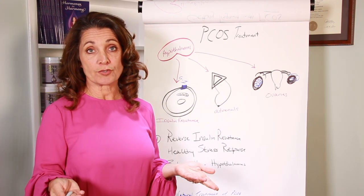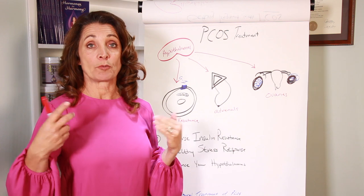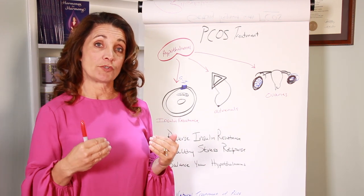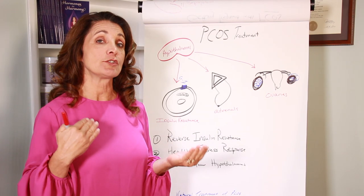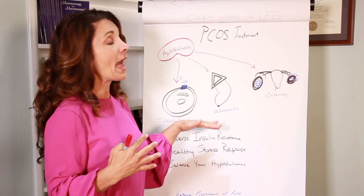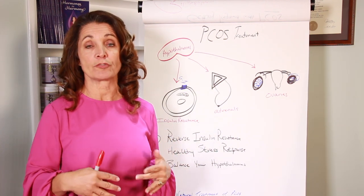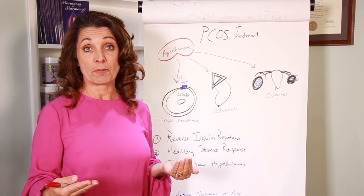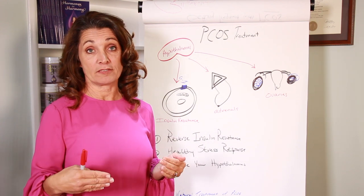We can support your adrenals with glandulars and with herbs. But the biggest way to support your adrenals is to start meditating, start breathing exercises. Anything to reduce that stress response will actually help to calm down the adrenals and calm down the inflammation that is caused by polycystic ovary syndrome.